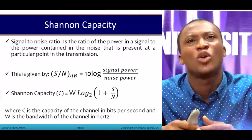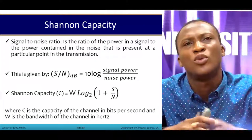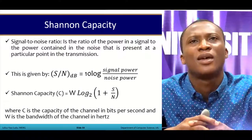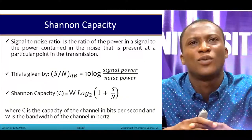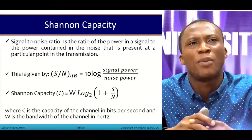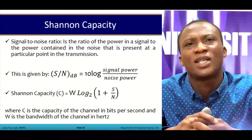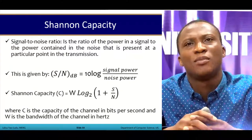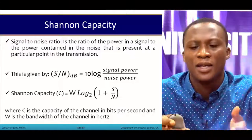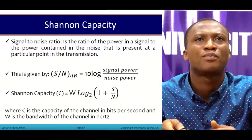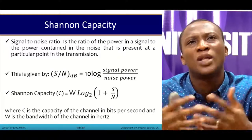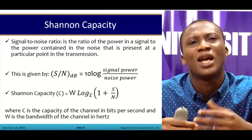Shannon capacity can be written as C = W log₂(1 + S/N), where S is the signal power, N is the noise power, C is the channel capacity measured in bits per second, and W is the bandwidth of the channel measured in hertz. This brings us to the end of this section, and we will take questions on Nyquist bandwidth and channel capacity.